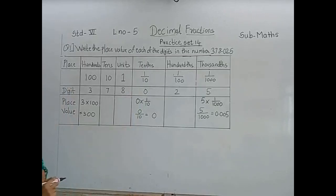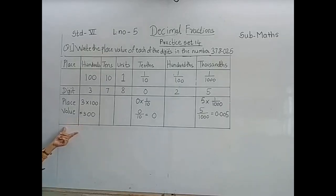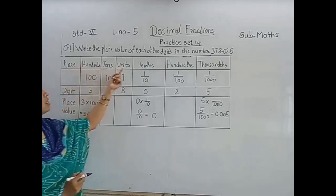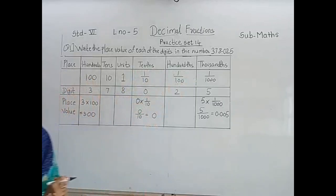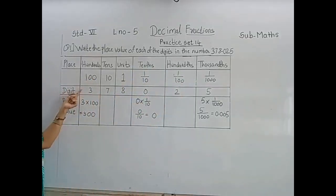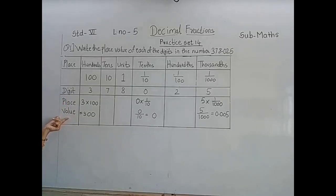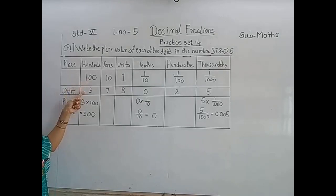Write the place value of each digit in the number 378.025. Observe the table. In this table they have given places: 100 place, 10th place, unit place, 10th place, 100th place, and 1000th place. And the digits are given here. And then here they have written place values. If we multiply these places by digits we get the place value.